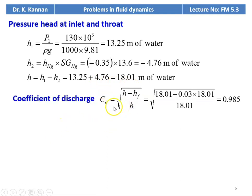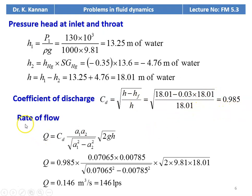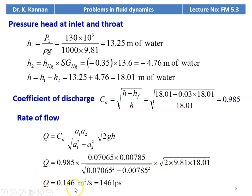The coefficient of discharge CD is defined as square root of (H minus HF) divided by H. Substituting: 18.01 minus HF, where HF equals 3 percent of H equals 0.03 into 18.01, divided by 18.01 equals 0.1885. Wait — CD equals square root of (18.01 minus 0.54) divided by 18.01 equals 0.985. The rate of flow Q equals CD into A1 A2 divided by square root of (A1 square minus A2 square) into square root of 2GH. Calculating, discharge Q equals 0.07065 into 0.00785 gives approximately 0.146 meter cube per second, which is 146 liters per second.